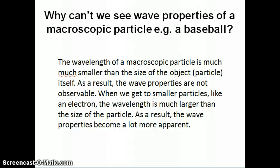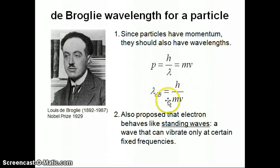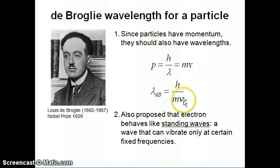Hi everyone. I want to continue talking about the wave nature of particles. Remember in the previous video we talked about de Broglie and his theory that all particles also have wavelengths, and you can calculate the wavelength by taking Planck's constant divided by the mass of the particle times its velocity.